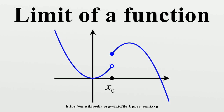Informally, a function f assigns an output f to every input x. We say the function has a limit L at an input p, meaning f gets closer and closer to L as x moves closer and closer to p. More specifically, when f is applied to any input sufficiently close to p, the output value is forced arbitrarily close to L.